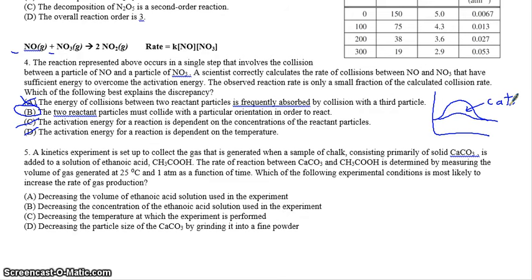And number five, which we may have seen already, says a kinetics experiment is set up to collect a gas that is generated with a small amount of chalk consisting primarily of calcium carbonate added to a solution of ethanoic acid. The rate of the reaction is measured by checking the volume of gas generated as a function of time. Which of the following experimental conditions is most likely to increase the rate of gas production? This is what we talked about at the very beginning. If you want to increase the rate, you can either increase the concentration, increase the temperature, or add a catalyst. A says the decrease in the volume of ethanoic acid. That would decrease the amount we have. Actually it would not decrease the concentration. A decrease in the volume actually won't do anything to the concentration. If you have a five molar solution and you're just using less of it, it's still five molar. So that actually doesn't do anything.